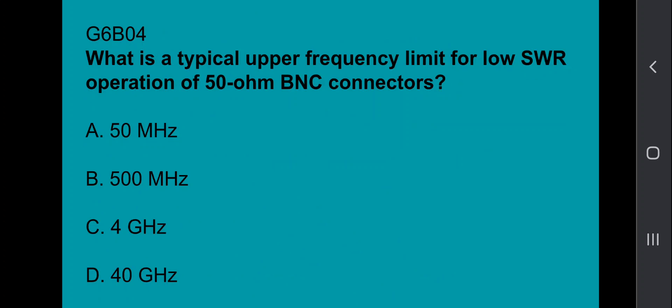G6B04: What is the typical upper frequency limit for low SWR operation of 50 ohm BNC connectors? It's going to be 4 GHz.